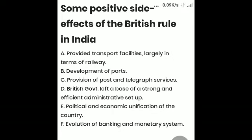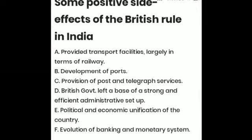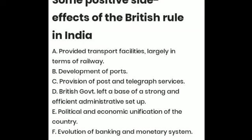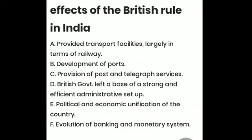Some positive impacts of British colonial rule: the Britishers made arrangements for transportation facilities and laid the foundation of railways. They also ensured the development of ports and harbors, and provided post and telegraph services. The British government also left a base of a strong, efficient administrative setup, though the main idea was to have political control over economic affairs. This was the first time political and economic unification of the country was taking place systematically. The Britishers also laid down the foundation of the banking and monetary system in the economy.